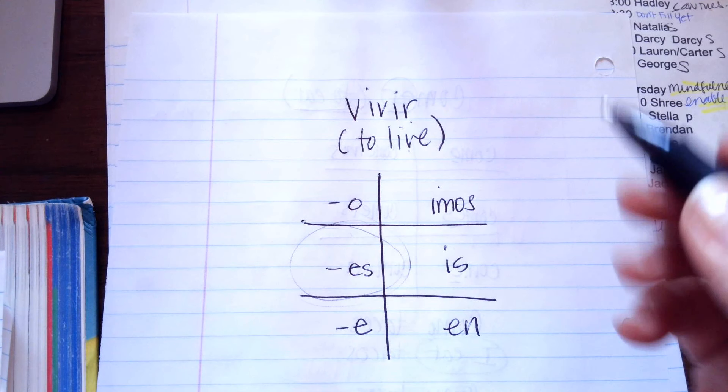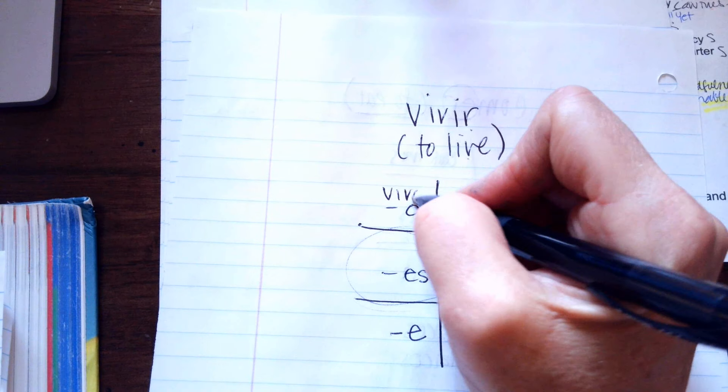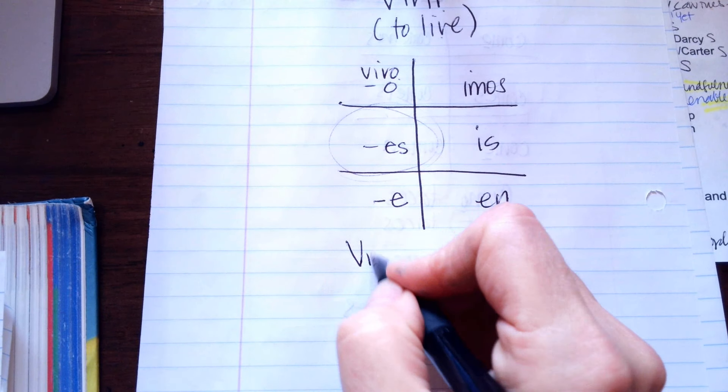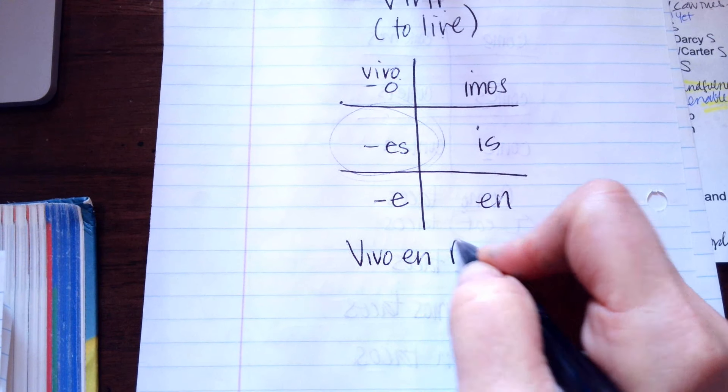Okay. So, this would be, vivo means I live in Redwood City. So, you would say, vivo in Redwood City.